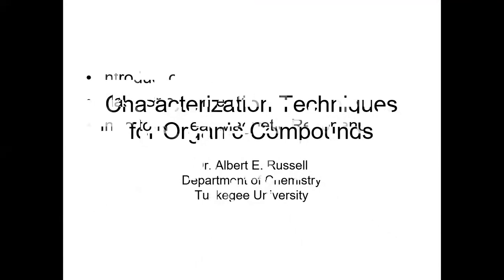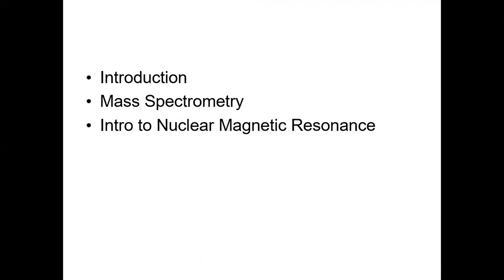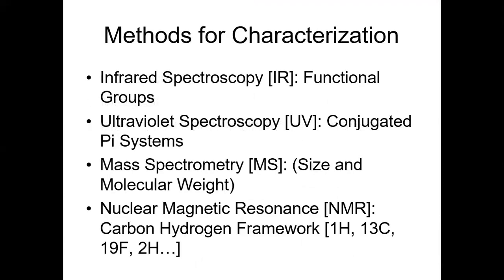We're going to talk about mass spec today. We already did NMR - this is actually another presentation I gave to a food and nutritional sciences class. The methods we've talked about already: infrared helps you identify functional groups, UV helps you identify whether there are conjugated pi systems present, mass spec tells us about the size and molecular weight of a compound, and NMR gives us the carbon-hydrogen framework. We only talked about proton NMR but there are other types like carbon-13, fluorine, silicon, and deuterium NMR.